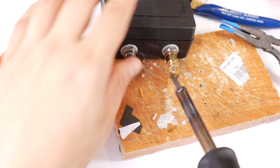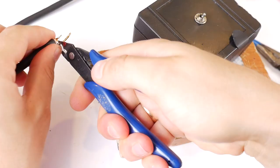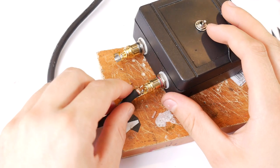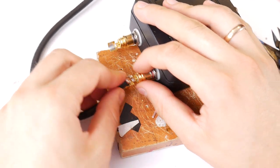Tin the RCA connector contacts to make the soldering process easier and the result better. Cut off the extra lengths of wire, leave them as long as needed for soldering so that they can be soldered without short circuiting.